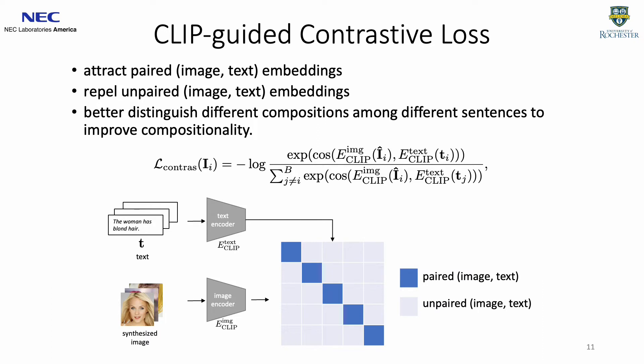In the CLIP-guided contrastive loss, we leverage CLIP, a foundation model, to jointly attract paired image-text embeddings and repel unpaired image-text embeddings. For example, the image embedding for 'she has blonde hair' should be dissimilar with other unpaired texts, such as 'he has blonde hair' or 'she has black hair.' As a result, the model can better distinguish different attribute compositions among different sentences for better compositionality.